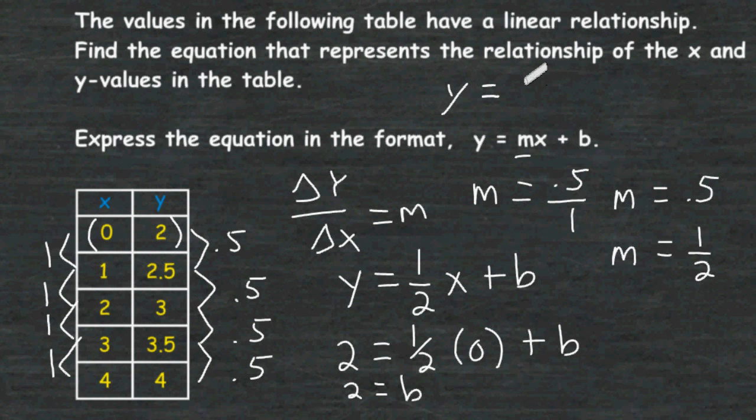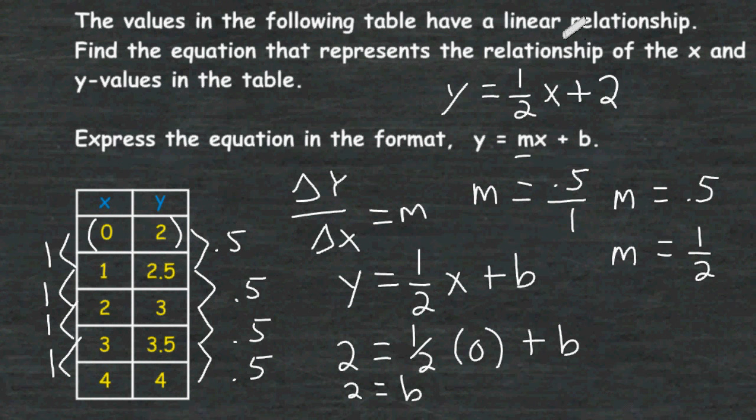When forming our equation, we write y equals whatever the m value is — in this case one half — times x. Because the b value is positive, we write plus 2. So the equation is y equals one half x plus 2, and this represents the relationship between x and y in the shown function table.